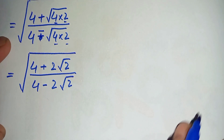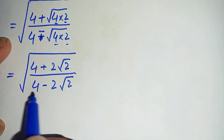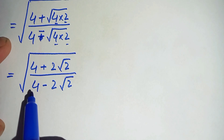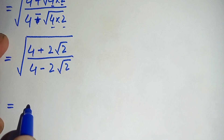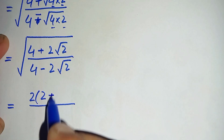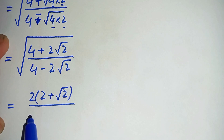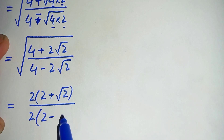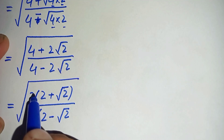In the next step, 2 is common in the numerator and denominator, so we will take 2 common from both and cancel it. Taking 2 common from the numerator gives us 2 plus square root of 2; taking 2 common from the denominator gives us 2 minus square root of 2, all under the square root.